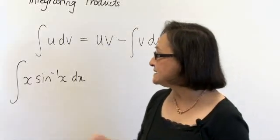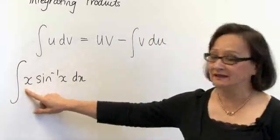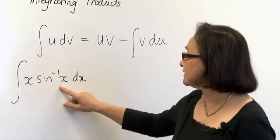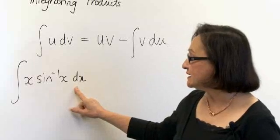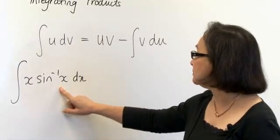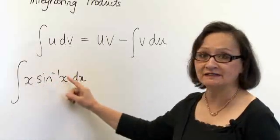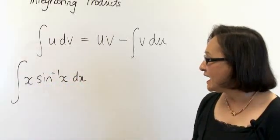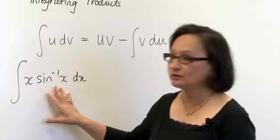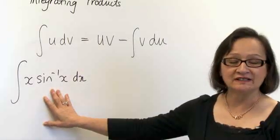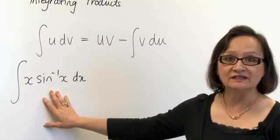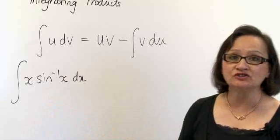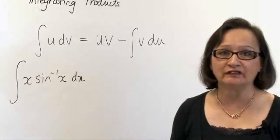So it would be easier if we had made the x dx to be dv and sine to the minus 1 of x to be u, since we can differentiate sine to the minus 1 of x. I find it much easier to work with a sine function than sine to the minus 1 function, so quite often it's much easier to solve this problem if we make a substitution for sine to the minus 1 of x.